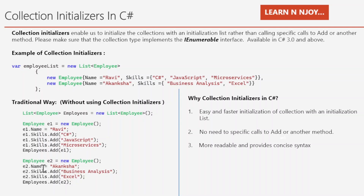Similarly, I created a second employee object e2, accessed its properties, assigned e2.Name = Akanksha, e2.Skills.Add("Business Analysis"), e2.Skills.Add("Actual"), then added it with empList.Add(e2). Both the collection initializer approach and the traditional approach produce the same result, but the collection initializer requires far fewer lines of code and is much cleaner and more readable.